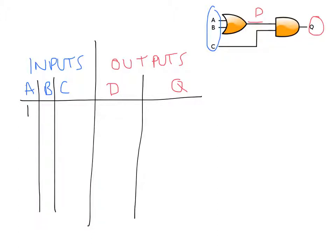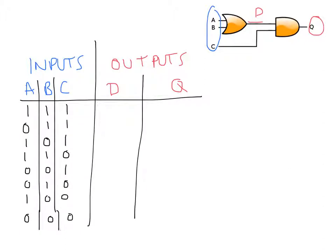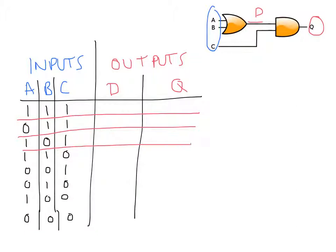I'll start with 1, 1, 1. Then 1, 1, 0. Then 1, 0, 1. Then 1, 0, 0. Then just one 1 and two zeros: 0, 0, 1 — then 0, 1, 0 — then 1, 0, 0. And then lastly I'll need to have no ones and three zeros: 0, 0, 0. I might draw in some lines so that I can see what matches with what.